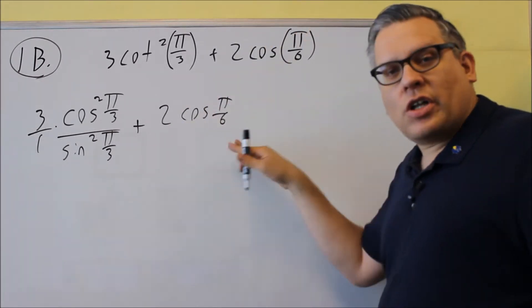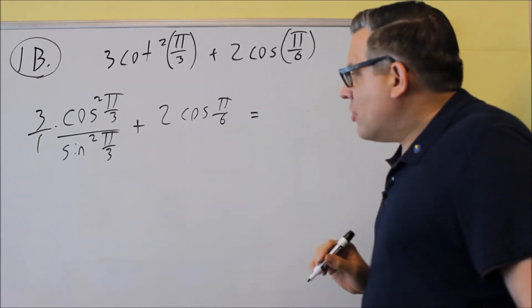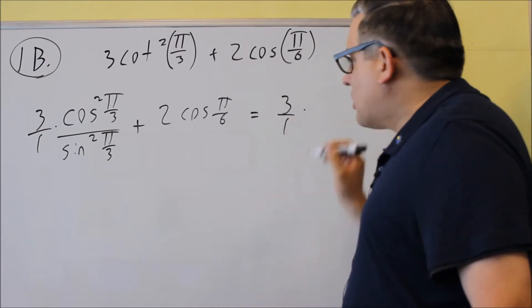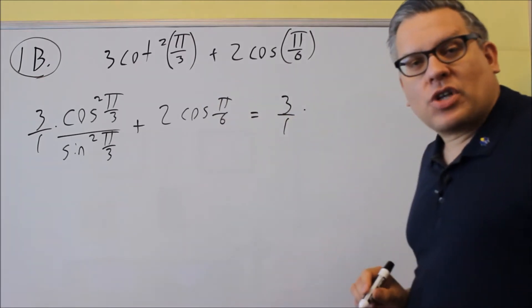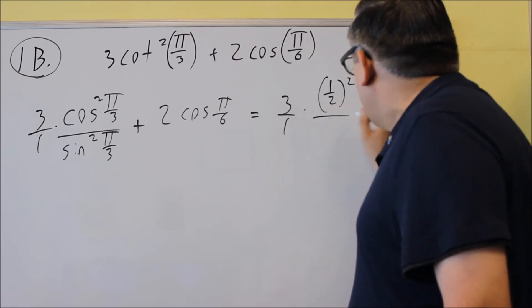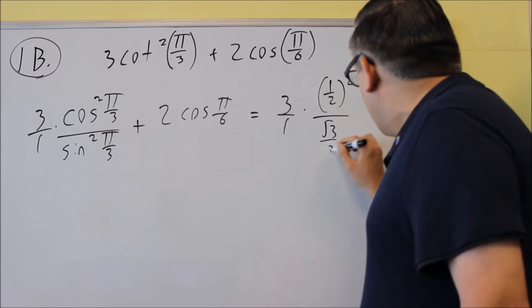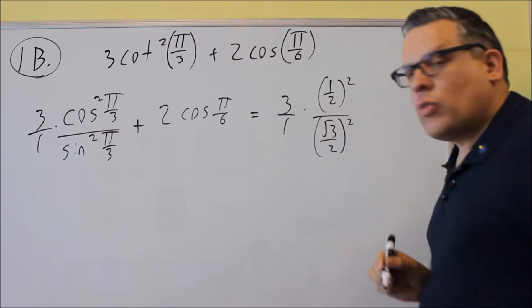So once we have this written out, we're now going to get values from the unit circle for each of these. So 3 over 1, now on top you have cosine pi over 3, that value is 1 half and we're squaring that one. Down below the value for sine pi over 3 is square root of 3 over 2 and we're squaring that one.